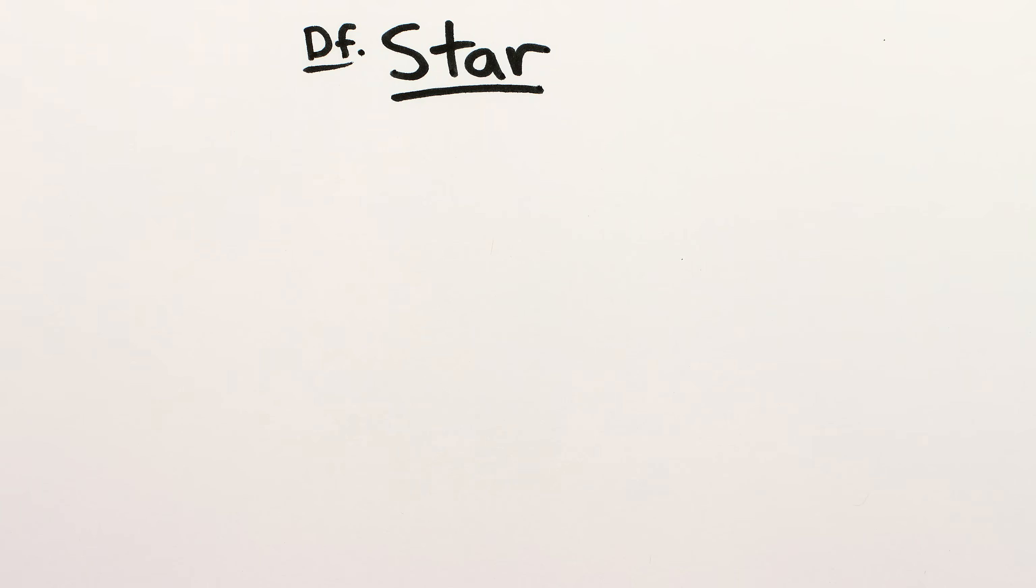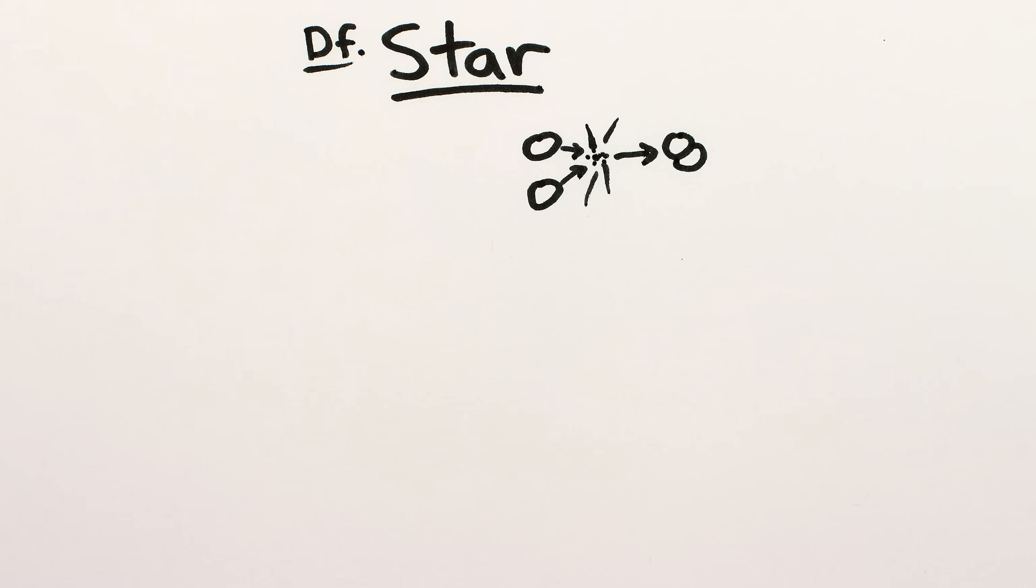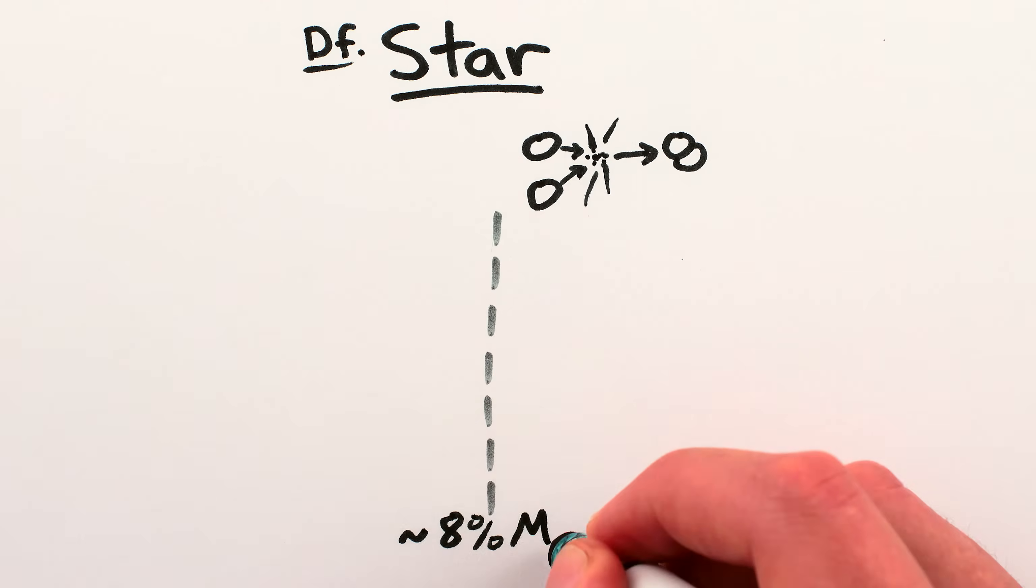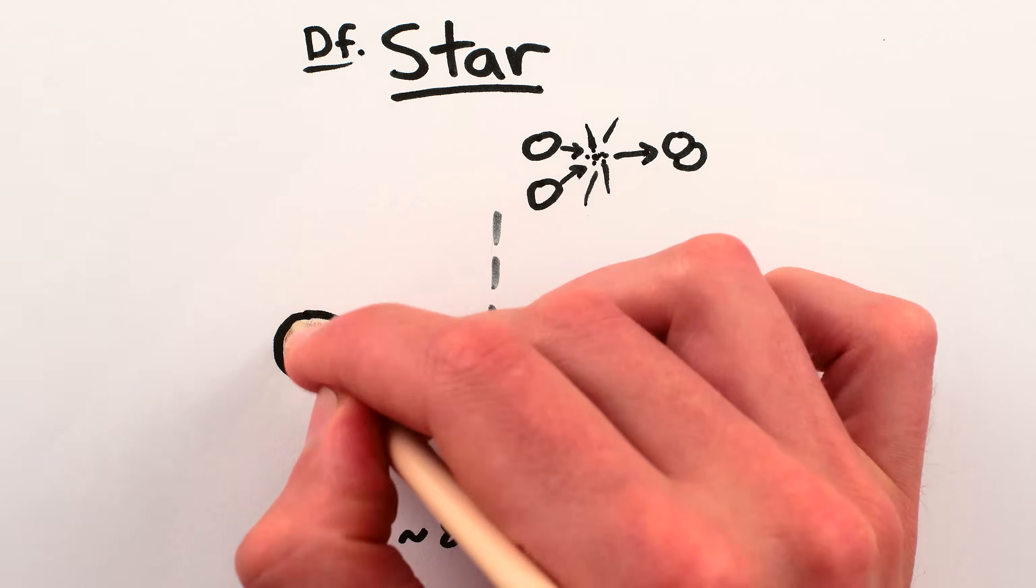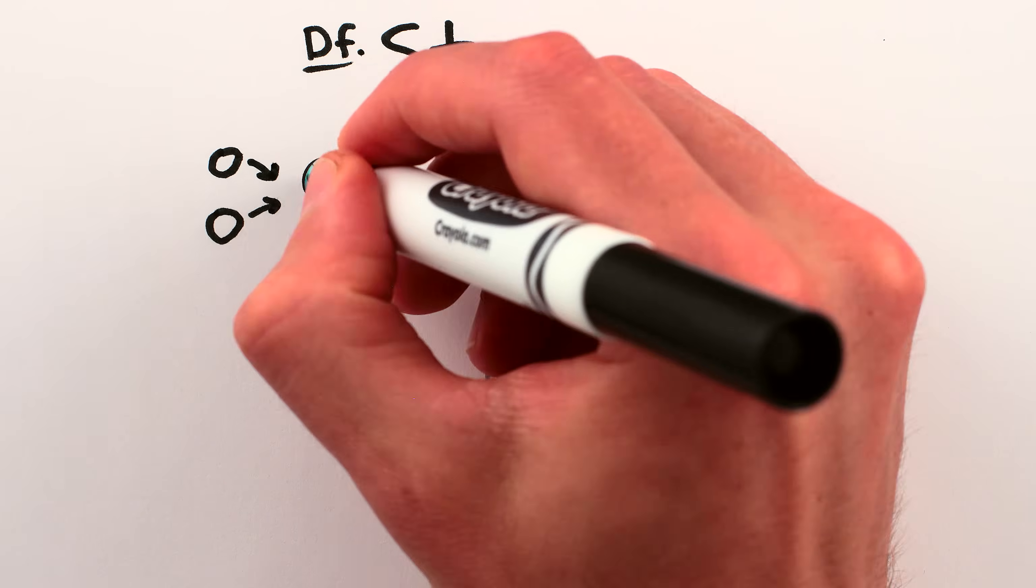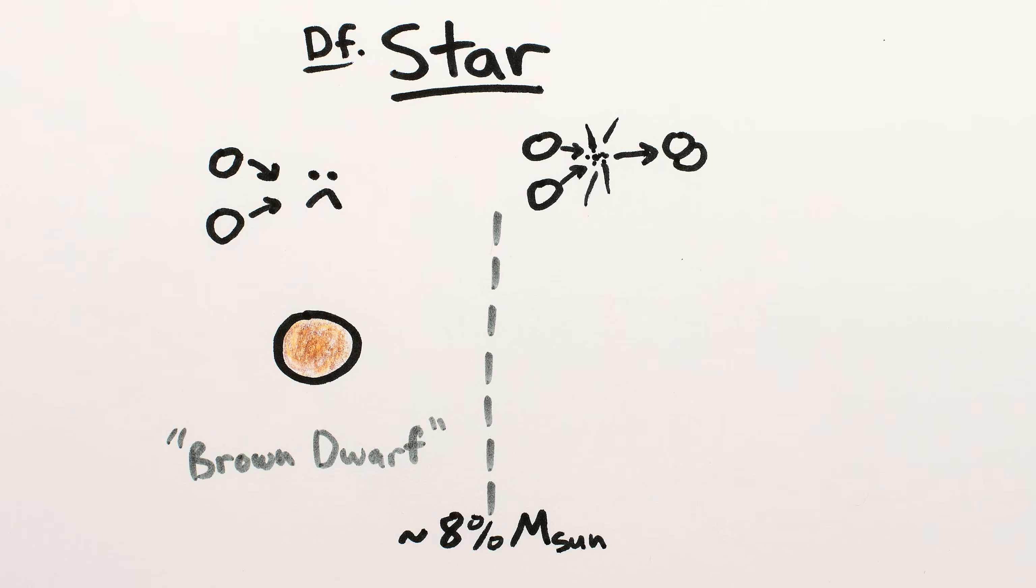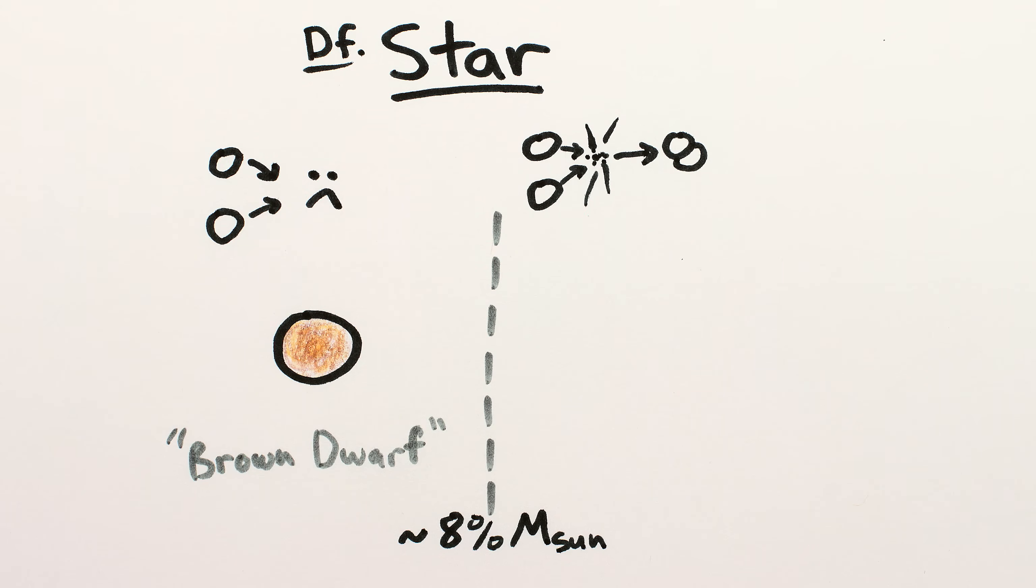Let's begin though with what makes something a star in the first place – fusion of hydrogen. Below about 8% of the mass of the Sun, a gas ball isn't hot and high pressure enough for hydrogen to fuse, and you get a failed star – essentially a really heavy version of Jupiter or Saturn.